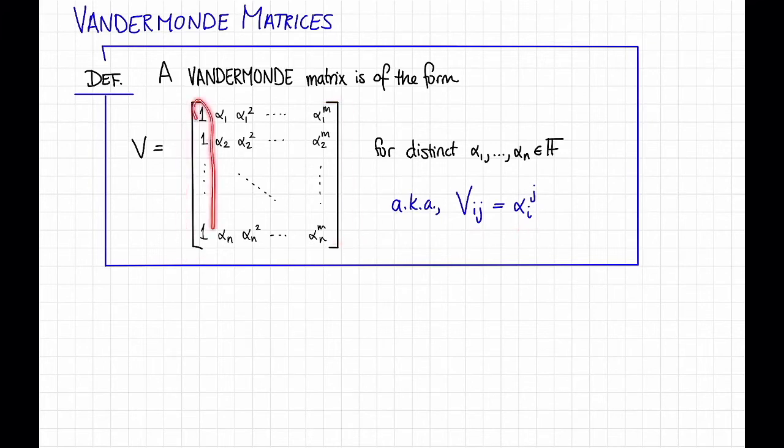So it looks like this. The first column is just a column of ones, that's all of the alpha_i's to the 0. The next column is just all of the alpha_i's, the next column is all of the alpha_i's squared, and so on, up to all of the alpha_i's to the m for some integer m.